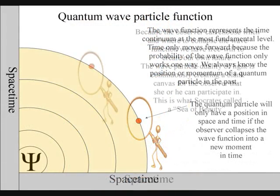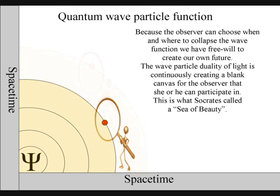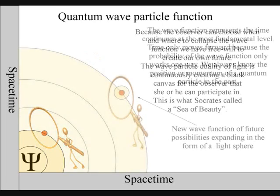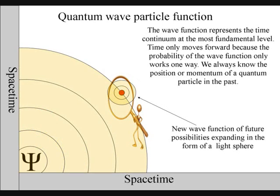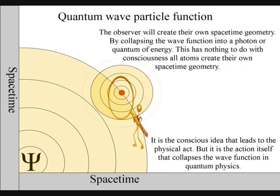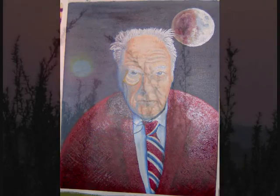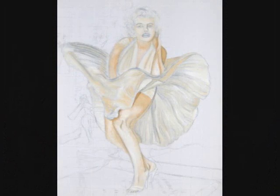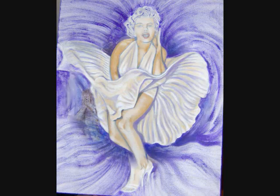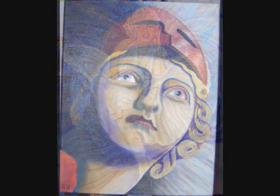But it is because life, in the form of an observer, can choose when and where to collapse a wave function that we have free will. Life will create its own ripples in the fabric of space-time, forming its own broken symmetry of its own evolutionary path. The forward momentum of light is continuously creating a blank canvas for the observer that she or he can participate in. This is what Socrates called a sea of beauty.